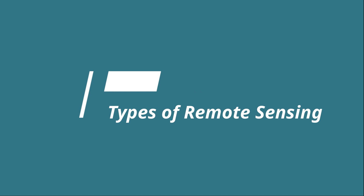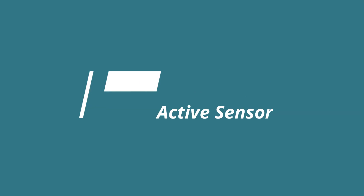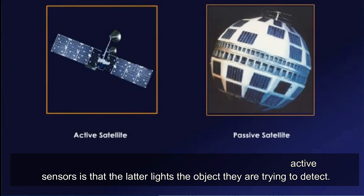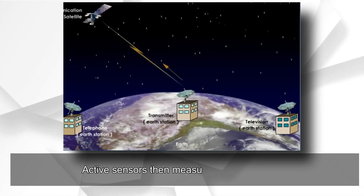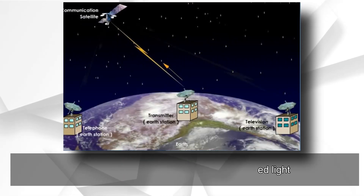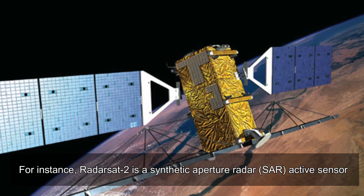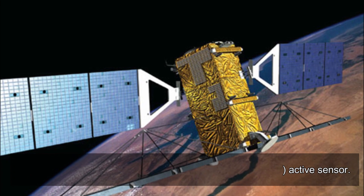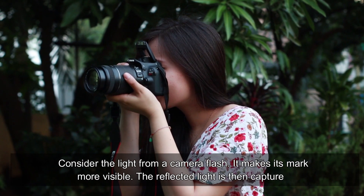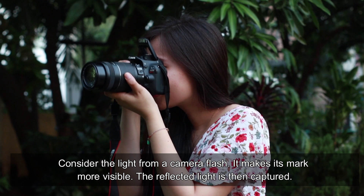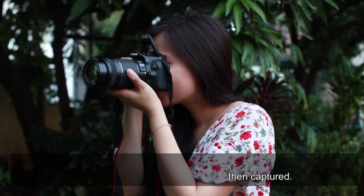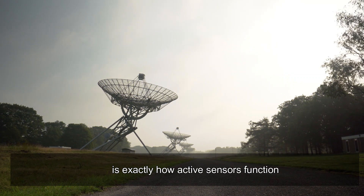Types of remote sensing. Active sensor: the primary distinction between passive sensors and active sensors is that active sensors illuminate the object they are trying to detect, and then measure the reflected light. For instance, RADARSAT-2 is a synthetic aperture radar (SAR) active sensor. Consider the light from a camera flash — it makes its target more visible and the reflected light is then captured. This is exactly how active sensors function.